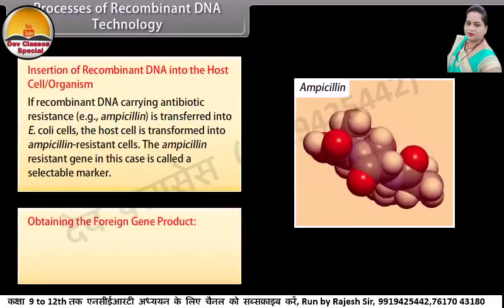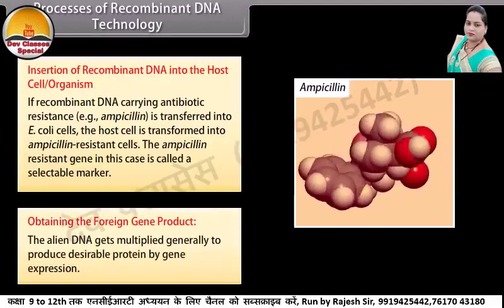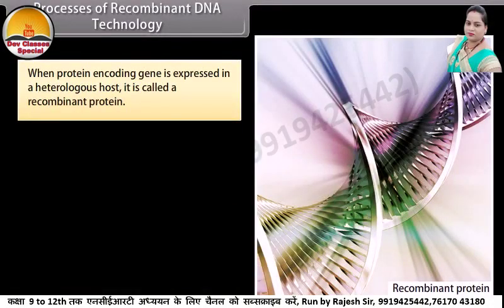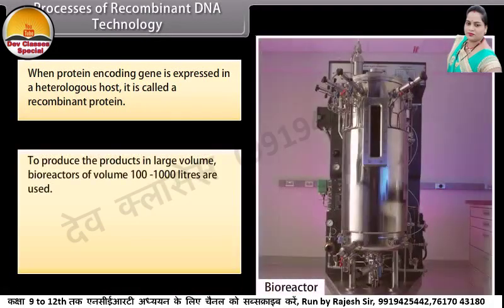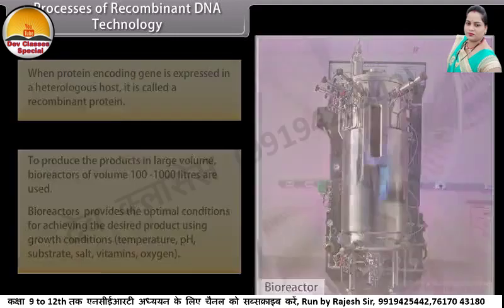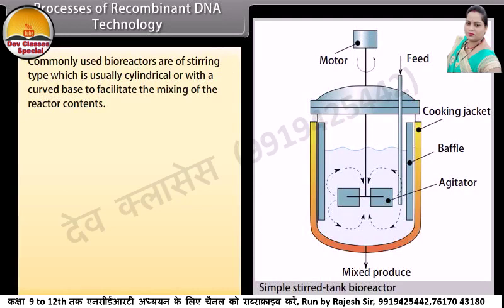Obtaining the foreign gene product: the alien DNA gets multiplied and generally produces the desirable protein by gene expression. When a protein-encoding gene is expressed in a heterologous host, it is called a recombinant protein. To produce products in large volume, bioreactors of volume 100 to 1000 liters are used. Bioreactors provide the optimal conditions for achieving the desired product using growth conditions such as temperature, pH, substrate, salt, vitamins, and oxygen. Commonly used bioreactors are of the stirring type, usually cylindrical or with a curved base to facilitate mixing of the reactor contents.